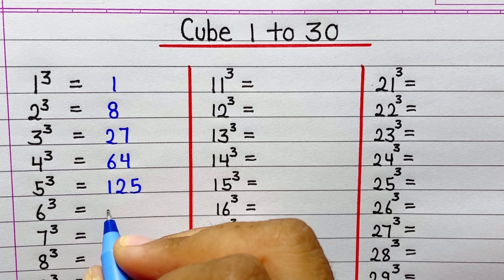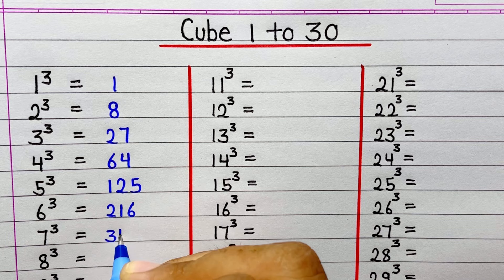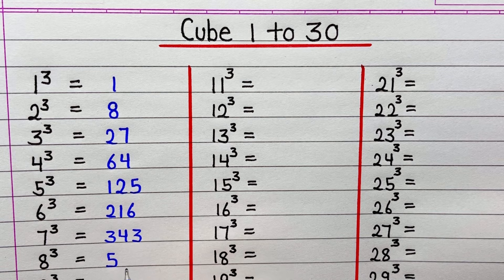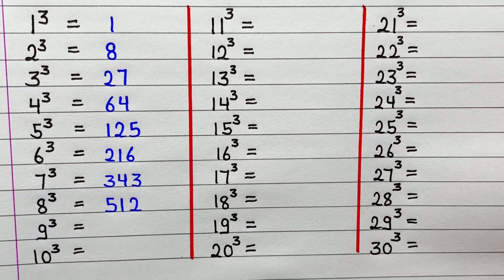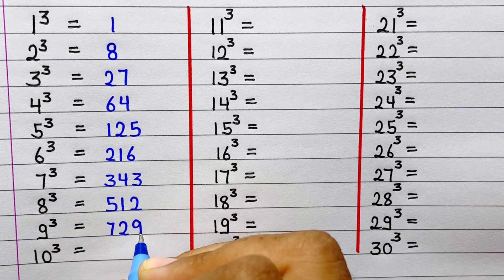Cube of 6 is 216. Cube of 7 is 343. Cube of 8 is 512. Cube of 9 is 729. Cube of 10 is 1000.